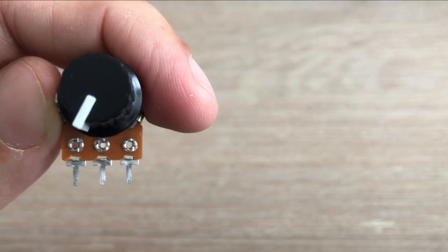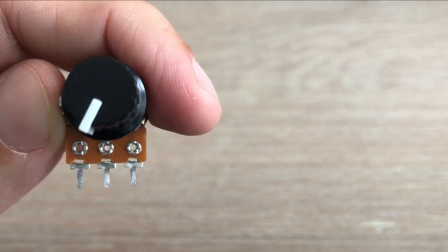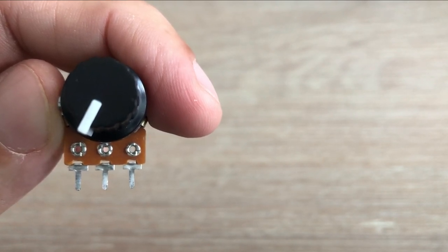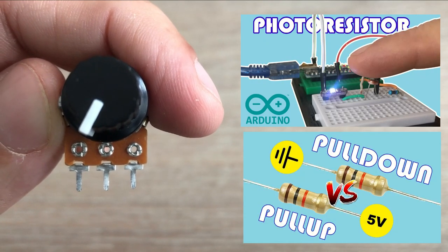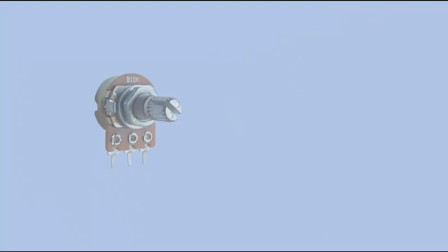If you watch my channel, I have already had videos on voltage dividers. I covered the topic in video about photoresistors. I also mention it when covering pull-up and pull-down resistors. Let's have a closer look.